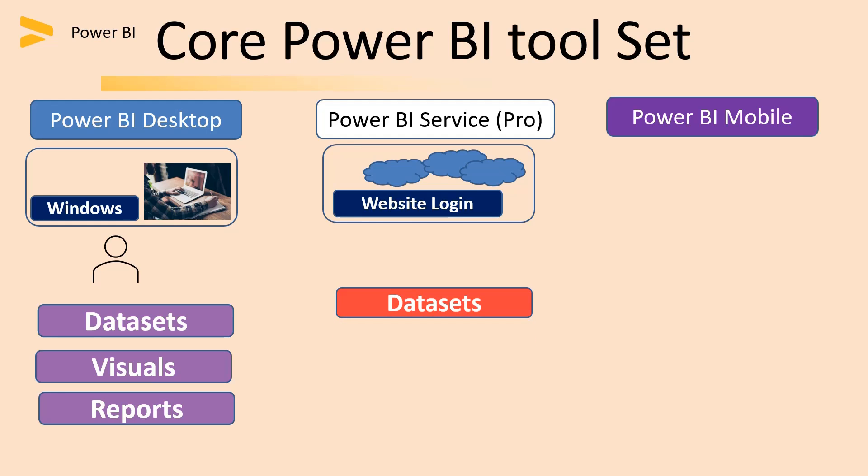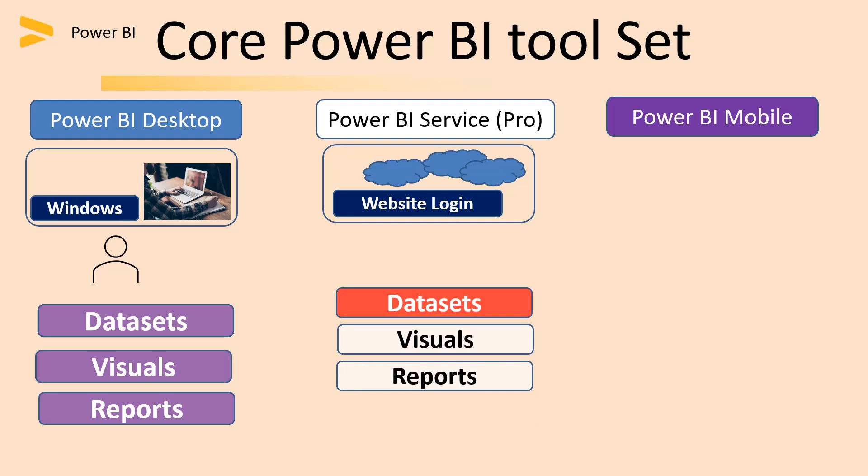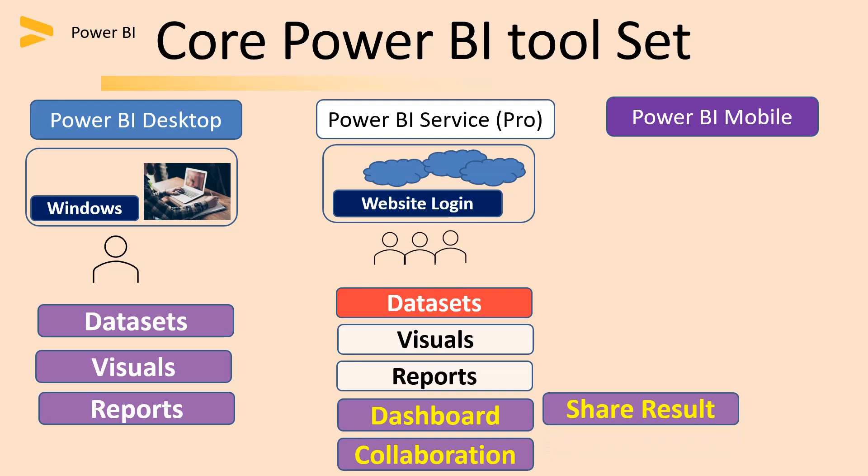In Power BI Service we don't have data sets and cannot connect to data sources directly, but we do have visuals and reports similar to what we can create in Power BI Desktop. Data sets can be taken from Power BI Desktop to create visuals and reports. There are also other powerful features, one of which is dashboards. A dashboard is a high-level structure where, on a single page, we can have multiple charts — column chart, bar chart, pie chart — and clicking on any chart allows us to drill down to a detail level.